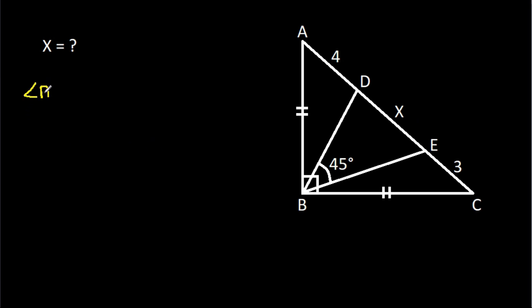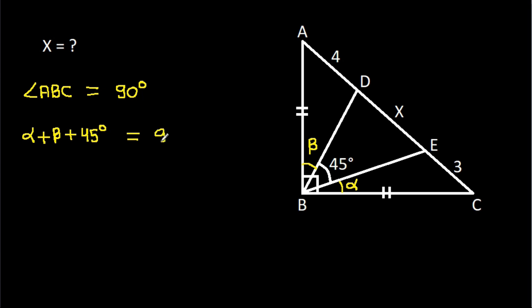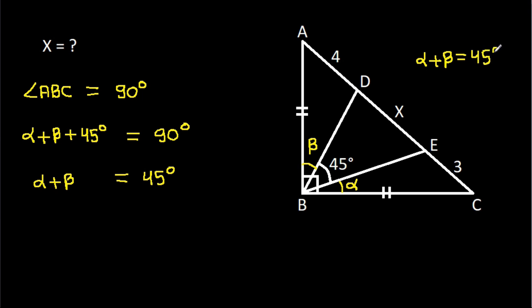We have angle ABC is 90 degrees. Suppose this angle is alpha and this angle is beta. Then angle ABC will be alpha plus beta plus 45 degrees, which equals 90 degrees. So we get alpha plus beta equals 45 degrees.